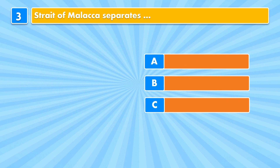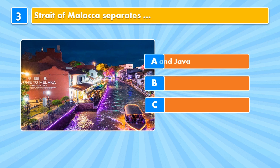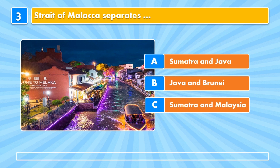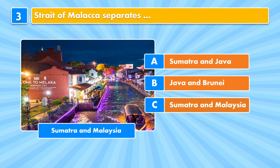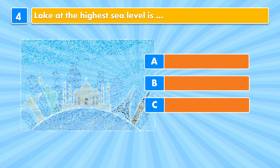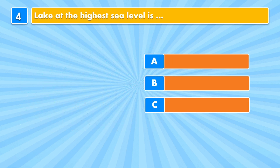Question three: the Strait of Malacca separates — Sumatra and Java, Java and Brunei, or Sumatra and Malaysia? Answer: Sumatra and Malaysia.